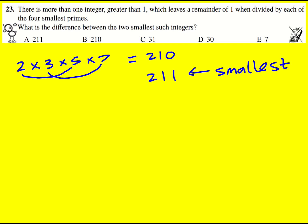And then the next smallest, well I'm going to take my 210 and I'm going to double it to 420. That is also divisible by 2, 3, 5, and 7, and it's going to be the second smallest number.